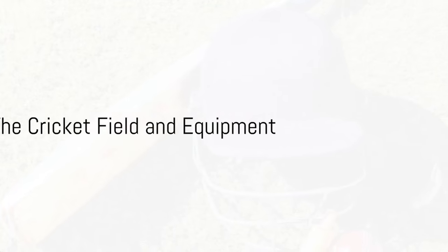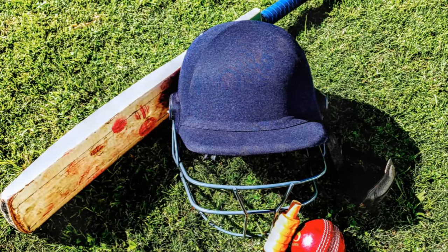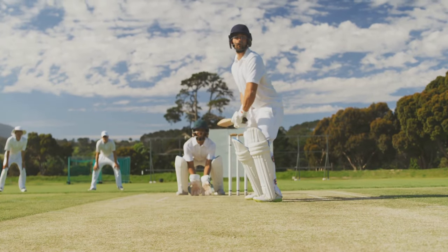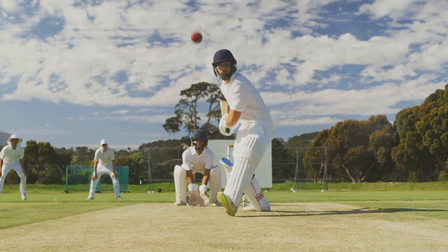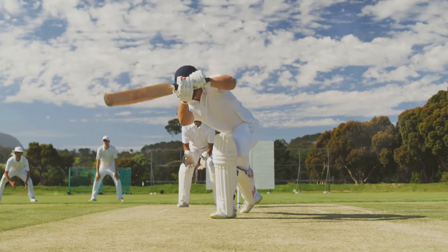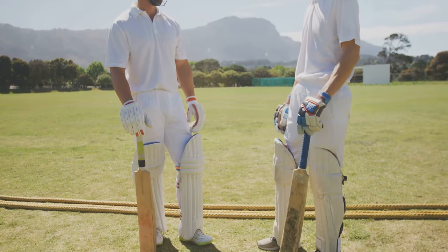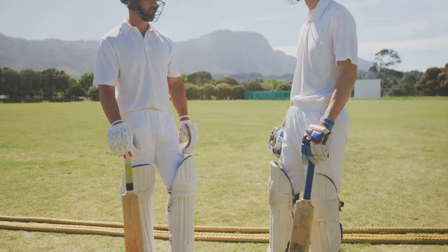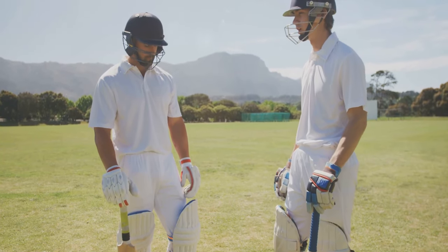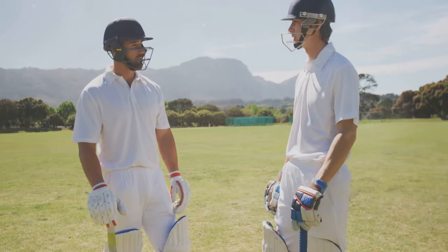First things first, let's understand the cricket field and the equipment used. Cricket, unlike many other sports, is played on an oval or circular field. This field is divided into two halves by a rectangular pitch. The pitch, the heart of the game, is 22 yards long and 10 feet wide. At each end of this pitch, there are three vertical stakes, known as stumps, which form the wicket. Two small pieces of wood, the bails, rest on top of these stumps.